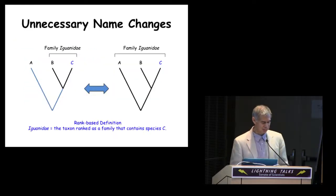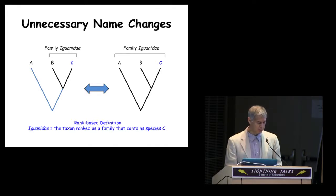Because names are defined in terms of rank, they can change their associations with clades as a result of simple changes in rank, that is, even when the composition of the clades remains unchanged. In this example, the same two clades, one composed of species A, B, and C, and the other composed only of B and C, are considered under two different ranking schemes.